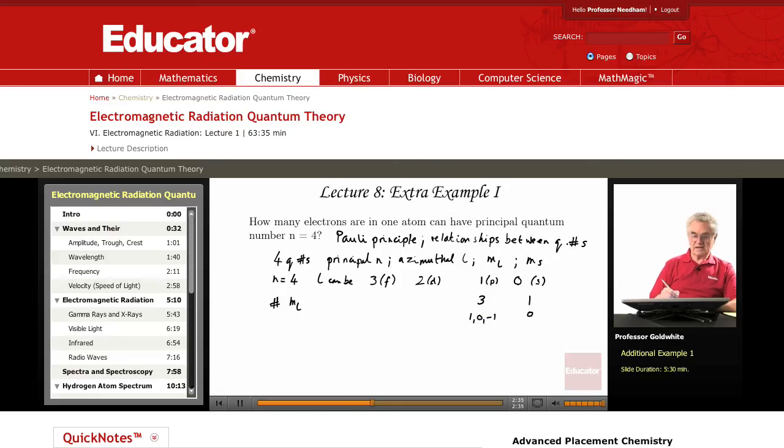For l equals 2, there are five possibilities. I think you see the pattern now: 2, 1, 0, negative 1, negative 2. And for l equals 3, there are seven possibilities.